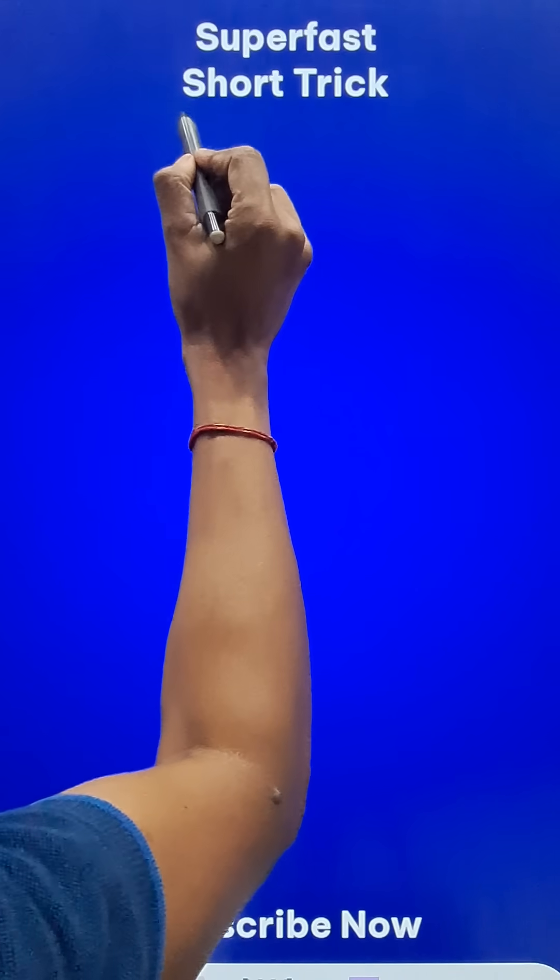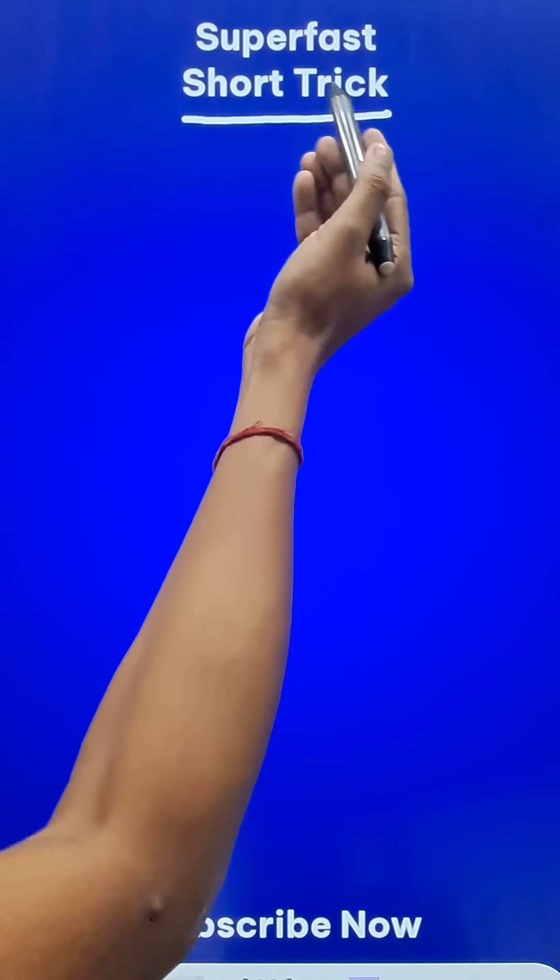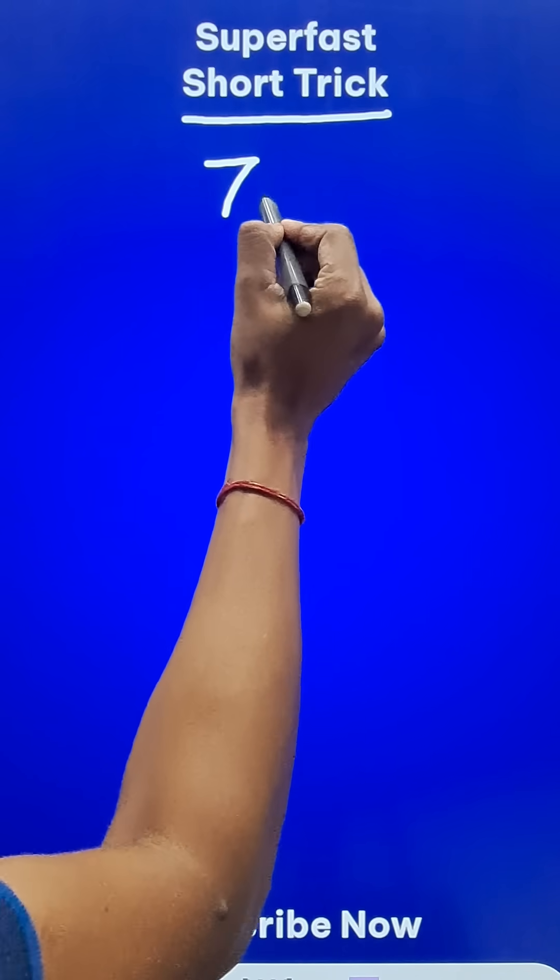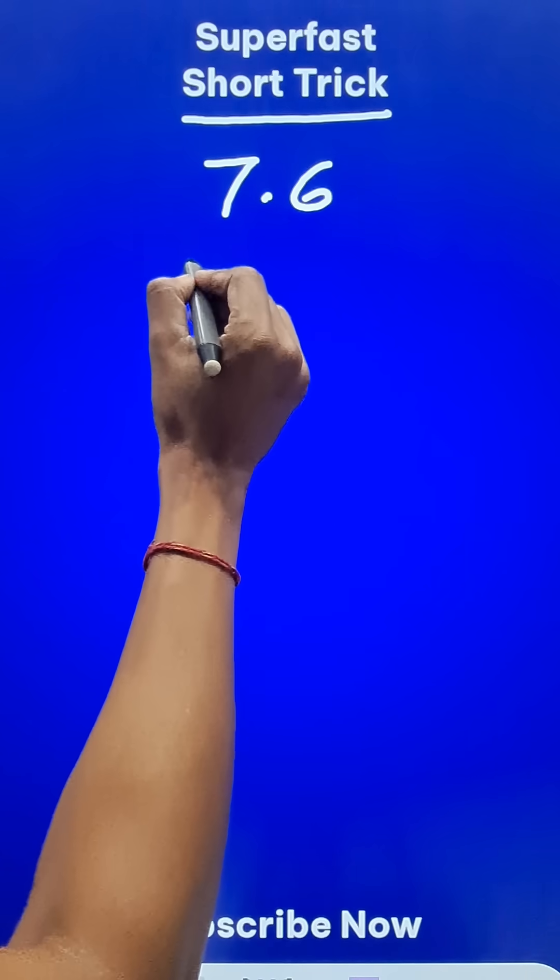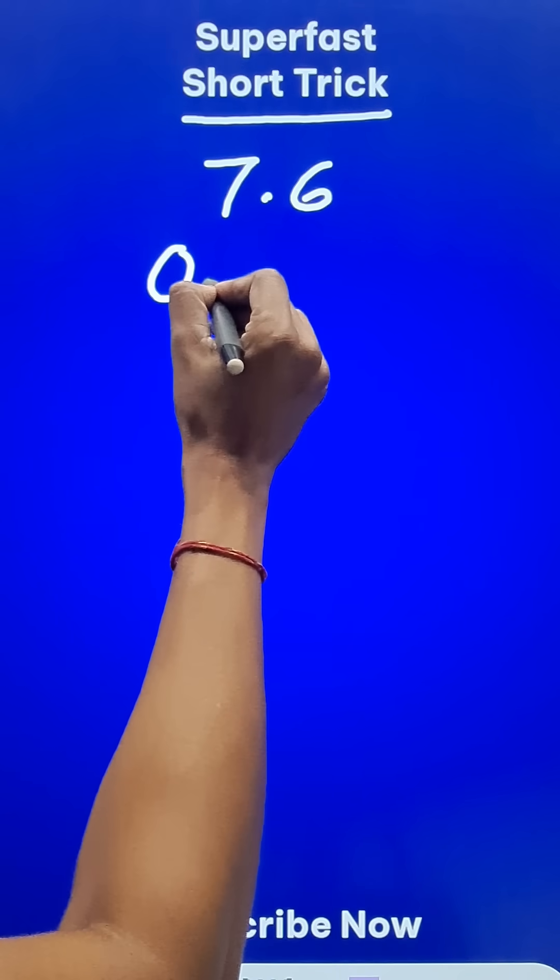Here is yet another super fast short trick of multiplying decimals. Suppose you have a decimal like 7.6 and you want to multiply that by some decimal like 0.49.